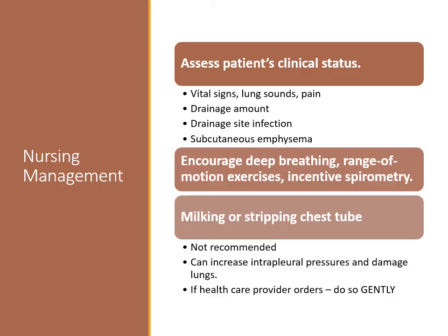Monitor the client's status: assess vital signs, lung sounds, and pain. Assess for manifestations of reaccumulation of air and fluid in the chest or absence of breath sounds. Watch for significant bleeding (100 mls or more per hour), signs of infection such as drainage, erythema, fever, increased white blood cell count, or poor healing. Notify the physician of the management plan. Evaluate for subcutaneous emphysema at the chest tube site. Encourage the patient to breathe deeply periodically to facilitate lung expansion and encourage range of motion exercises to the shoulder on the affected side. Encourage use of incentive spirometry every hour while awake to prevent atelectasis or pneumonia. Milking or stripping chest tubes is no longer recommended as these practices can dangerously increase interpleural pressure and damage lung tissue. Position tubing so that drainage flows freely. If ordered by a physician to milk or strip a tube, do so gently.